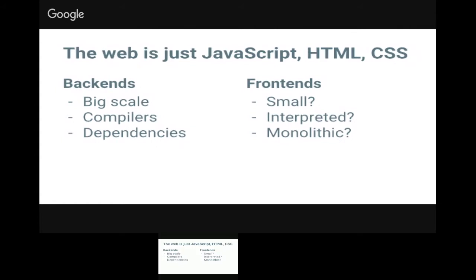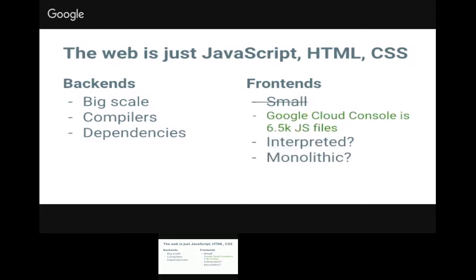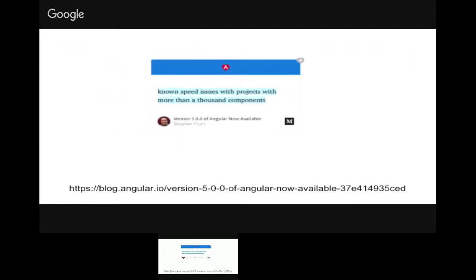It's not actually true that web development doesn't need Bazel. Back-ends have the problem of being large scale, requiring compilers, and having sets of dependencies to build. If we look at what we do at Google, Google Cloud Console has 6,500 TypeScript files — it's a pretty big project. We just launched version 5 of Angular, and a known issue is speed problems with projects that have more than 1,000 components. We have projects of that size internally, and externally people with projects of that size have problems.